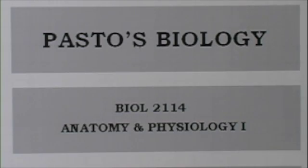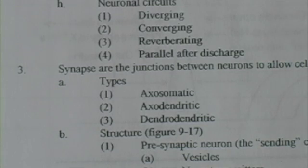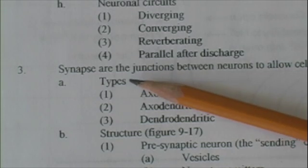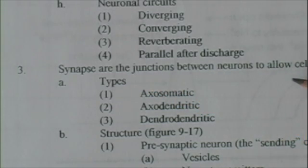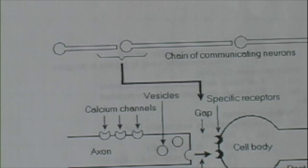Pasto's biology. Topics from the study guide. On page 9.22 in your study guide is a discussion of the synapse, which is a junction between neurons.